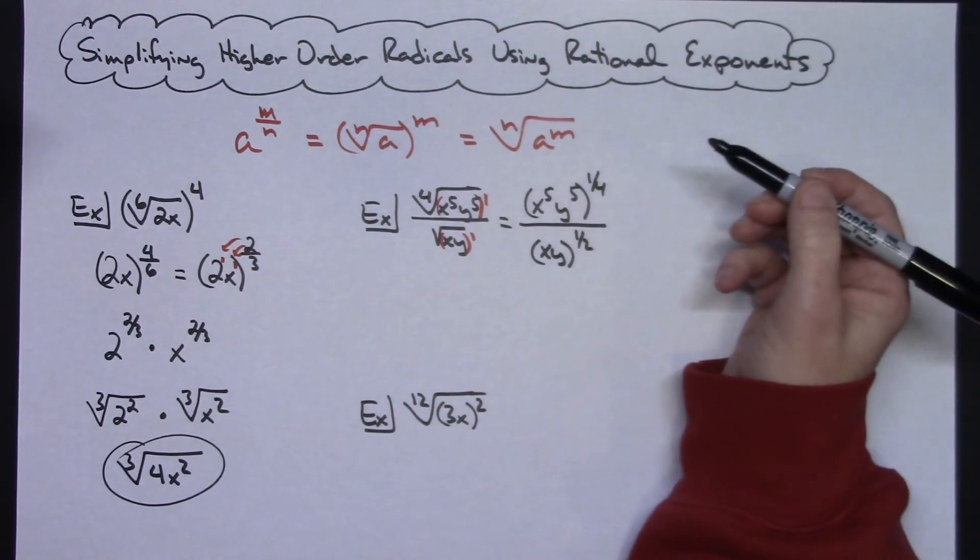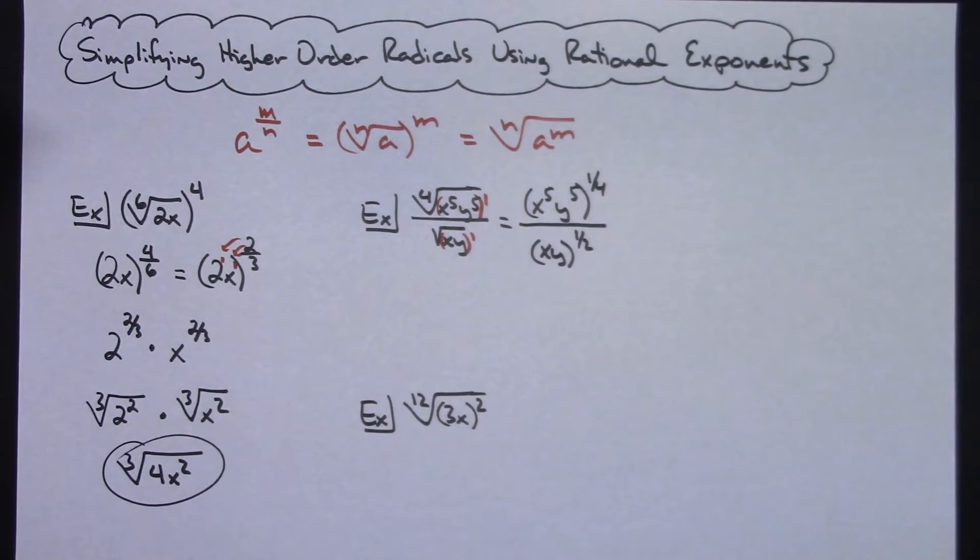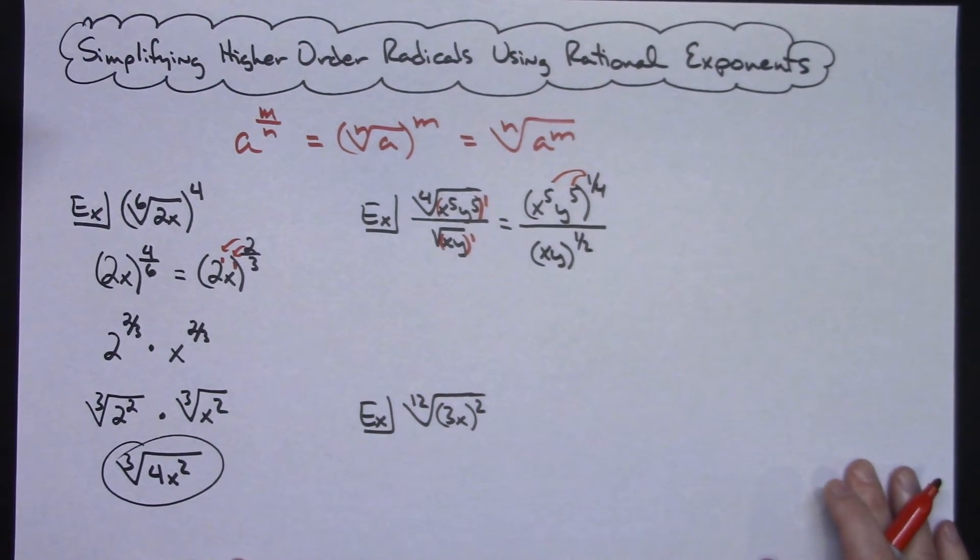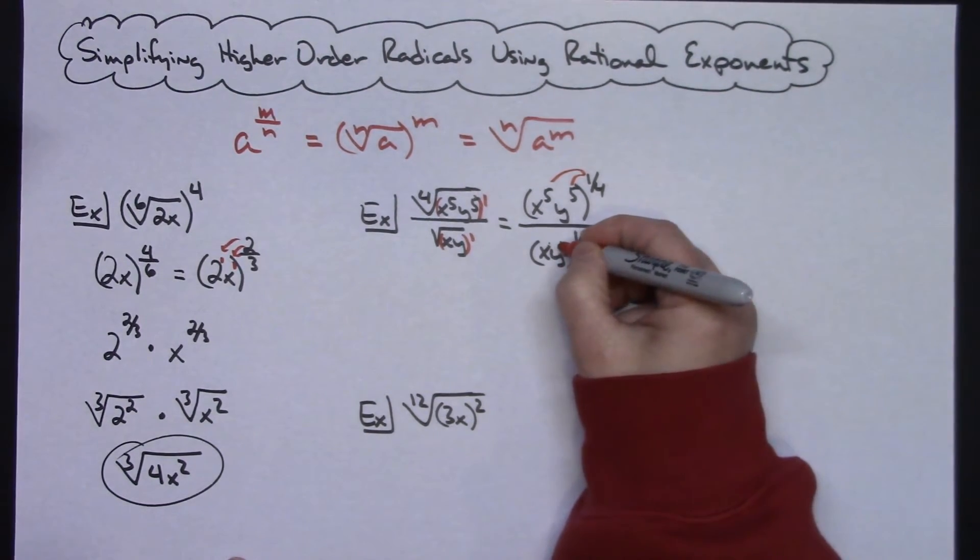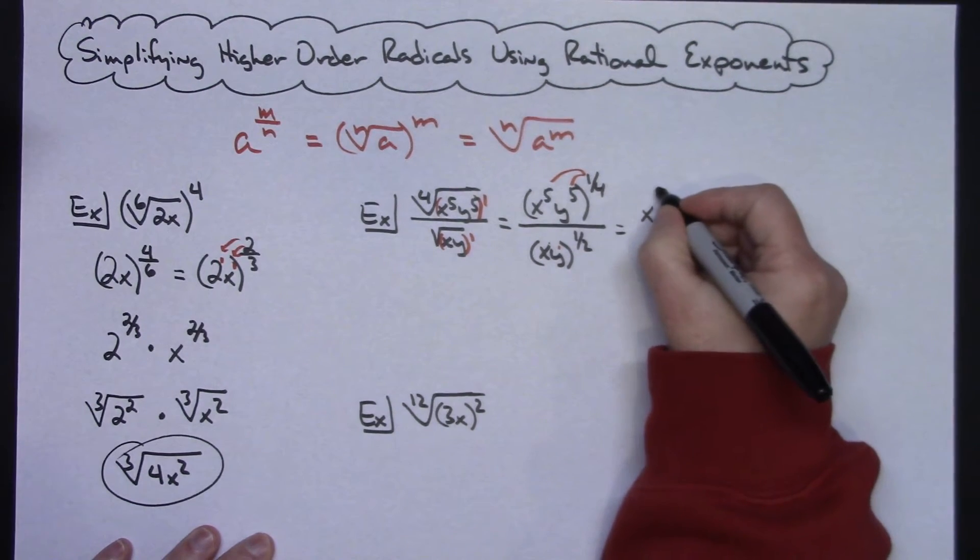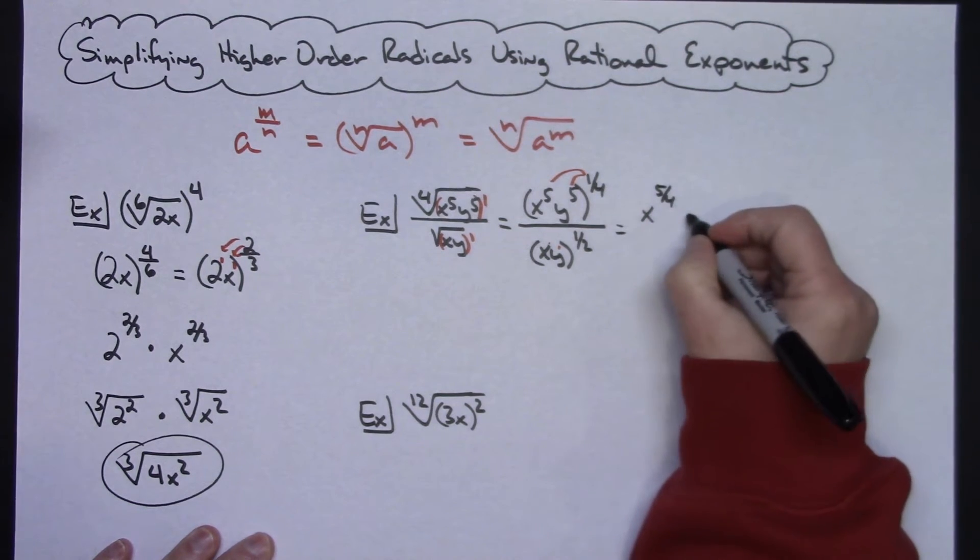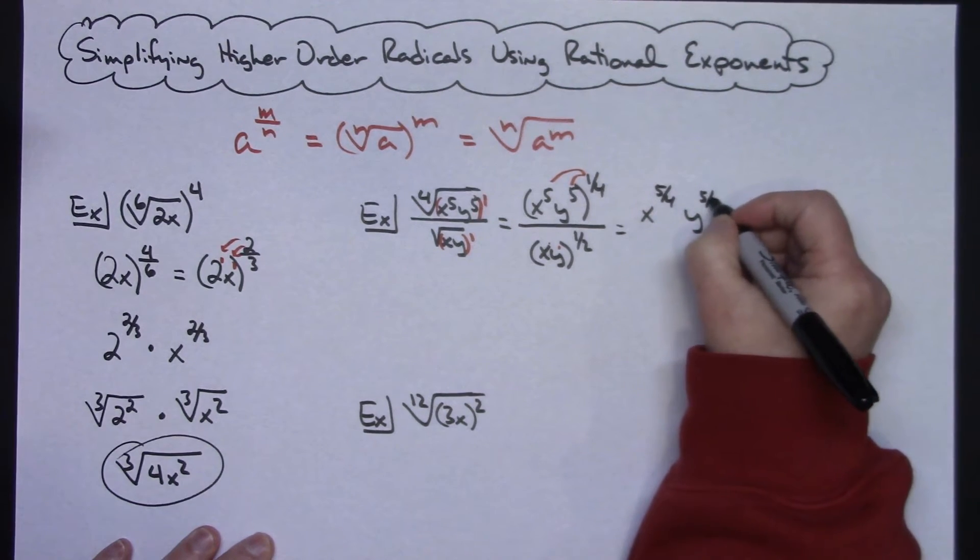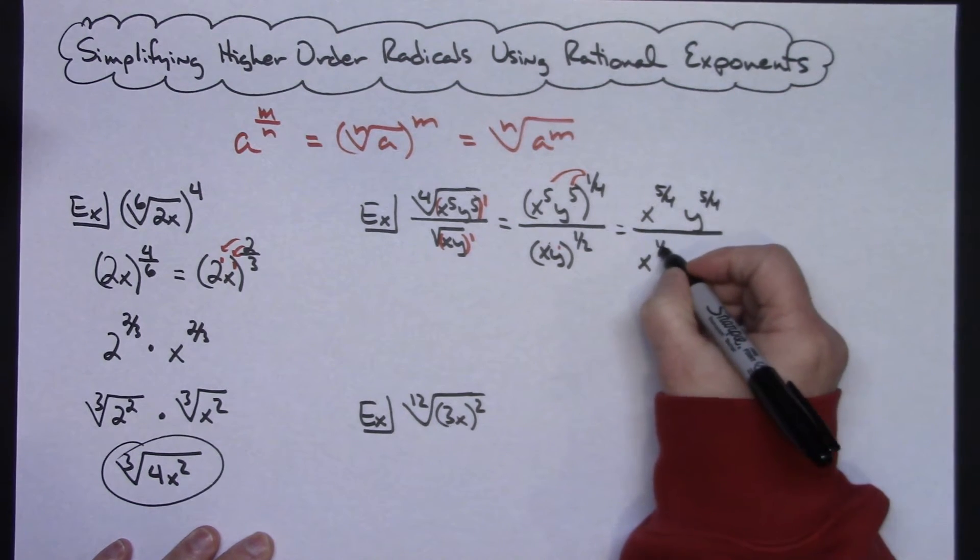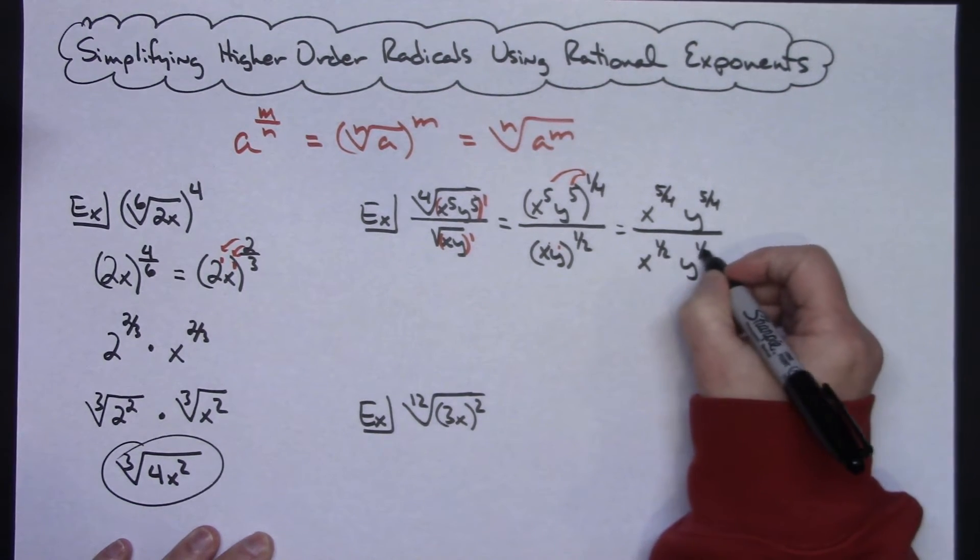Now power raised to a power means I multiply. So I've got to take that 1/4 times the 5 and then 1/4 times that 5 right there. And then also the imaginary ones that are on the x and y, I've got to do it to that as well. So power raised to a power rule, x raised to the 5/4, y raised to the 5/4, and then x raised to the 1/2, y raised to the 1/2.